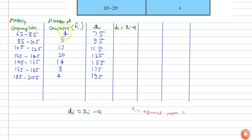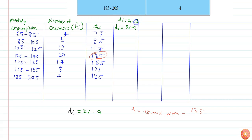The assumed mean can be chosen from the values of xi. Here I am choosing 135 — you can choose any value from xi. So assumed mean a will be 135. Then our di will be xi minus 135. Here 75 minus 135 will be minus 60.